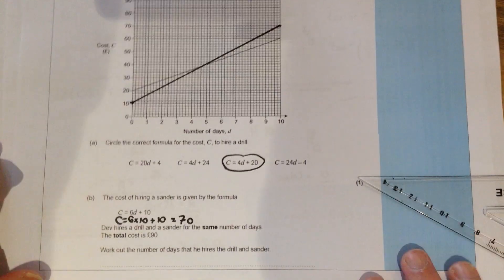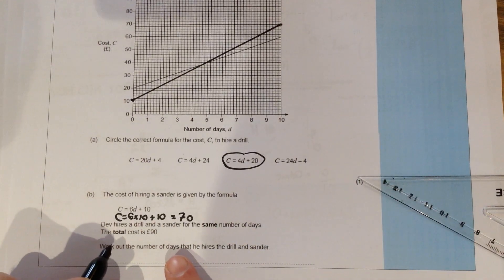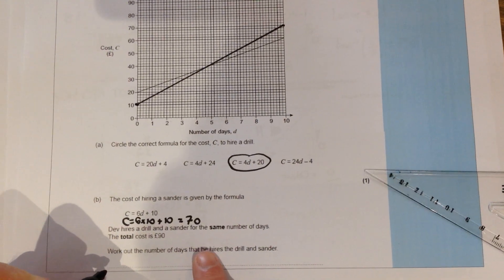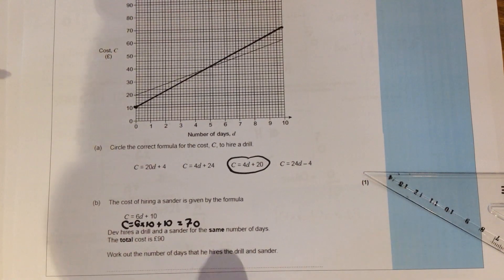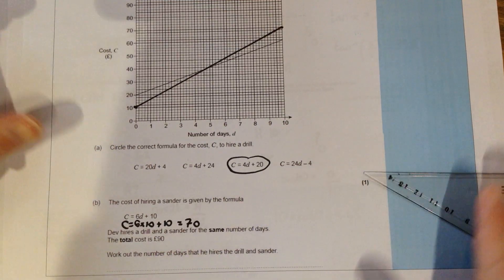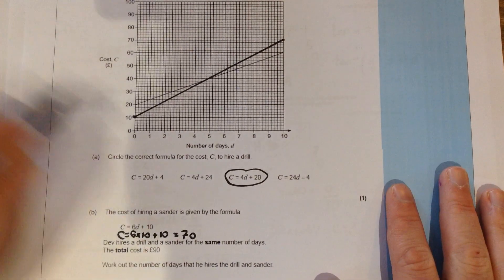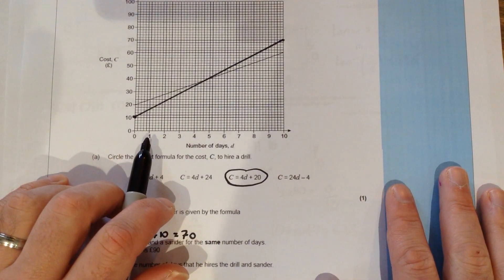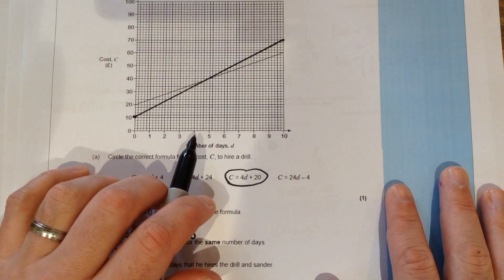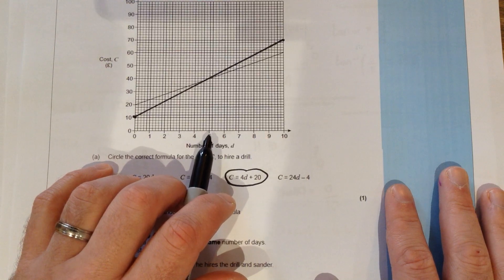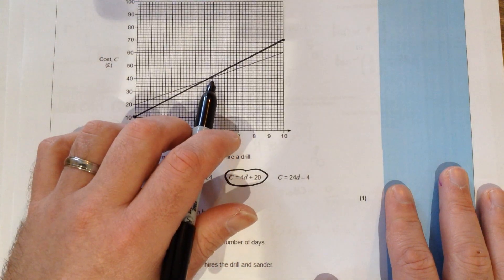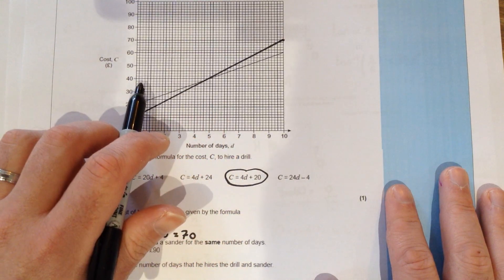The next part of the question then says if you were having both at the same time, so both the sander and the drill, so both of these conversion graphs being used here, what would the cost, sorry how many days would it be if it had a total cost of 90. All I would do there is a little bit of trial and error, is go along the graph and read off the values at different points on the graph.